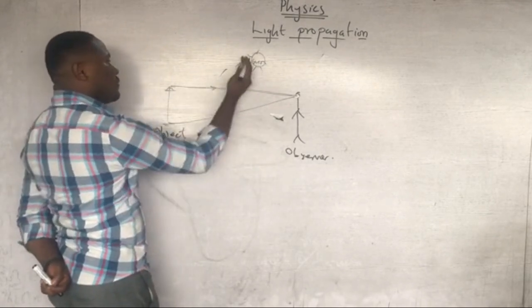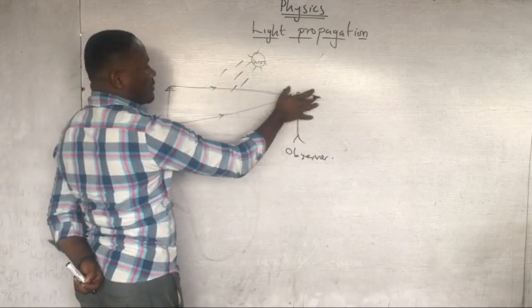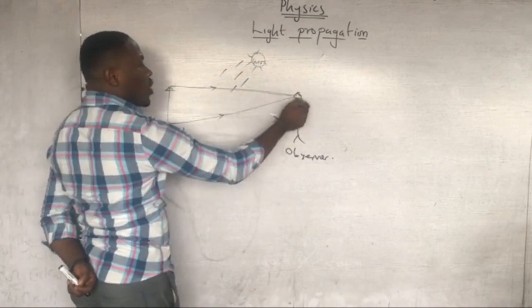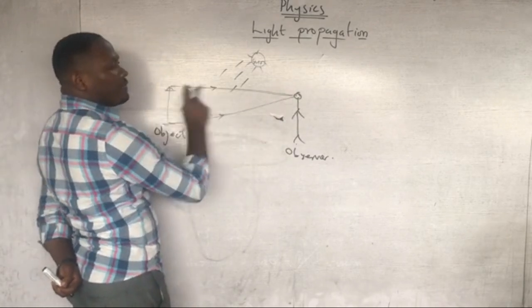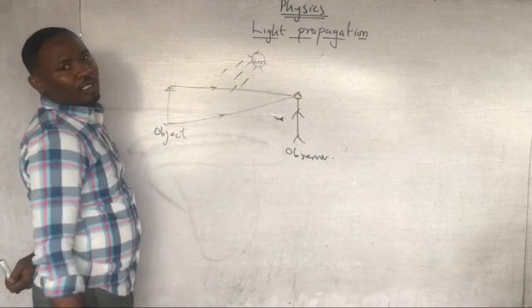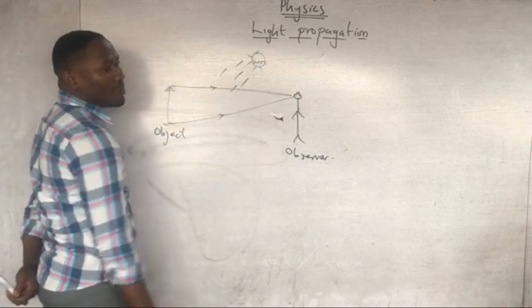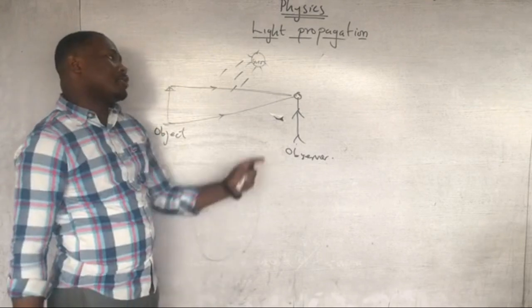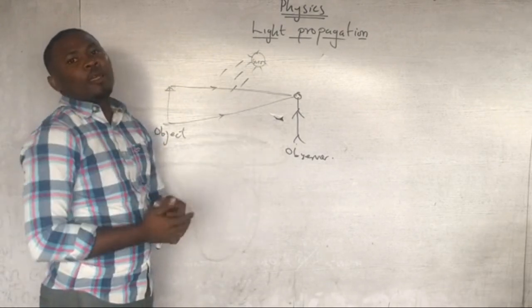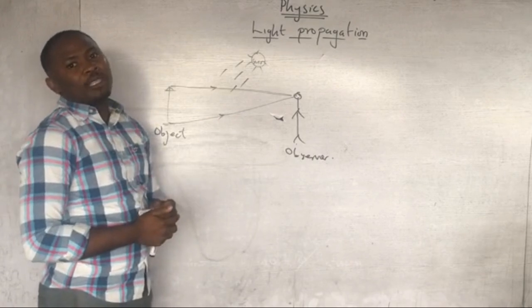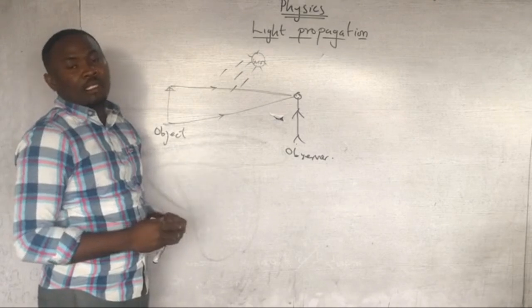These rays of light are reflected to the eye of the observer, so the person observing is seeing the object by the reflection of light rays from the object. The light rays reflected to the observer reach the retina, and this impulse is sent to the brain through the optic nerve for interpretation of what is being seen.